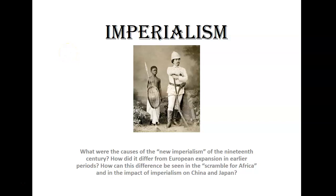This History 1101 lecture is titled Imperialism. In this lecture, we will look at the following questions: What were the causes of the new imperialism of the 19th century, and how did it differ from European expansion in earlier periods? In the second half of this lecture, we will look at the question: how can this difference be seen in the scramble for Africa and in the impact of imperialism on China and Japan?